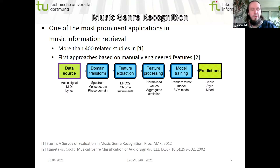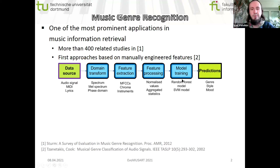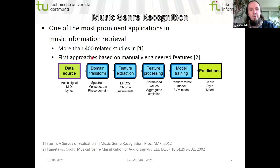The first approaches are usually based on manually engineered features. We start with some data source — typically an audio signal in earlier works, but also MIDI annotations, lyrics, album covers, and so on. What we want at the end is a music genre, music style, or maybe some other high-level category like mood or emotion. In between, we apply domain transforms, typically Fourier transform, mel spectrum, autocorrelation, phase domain, and so on.